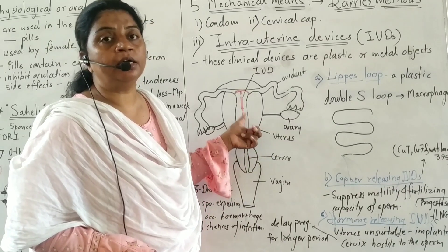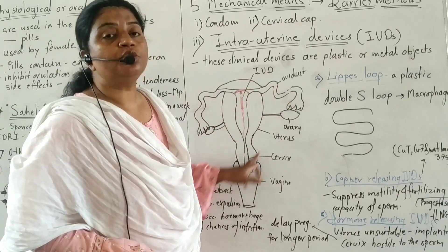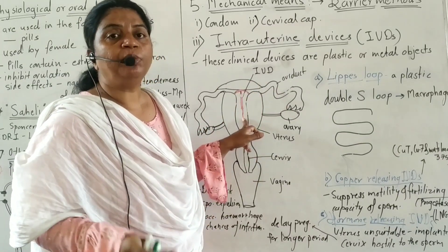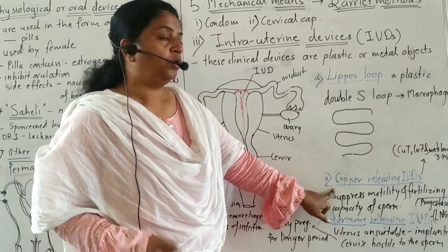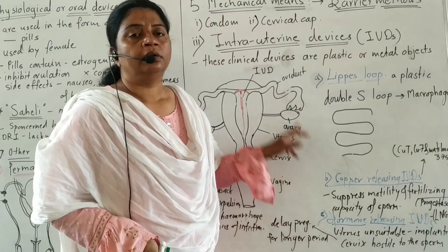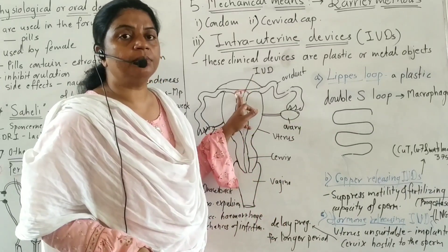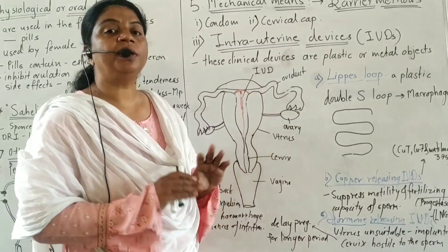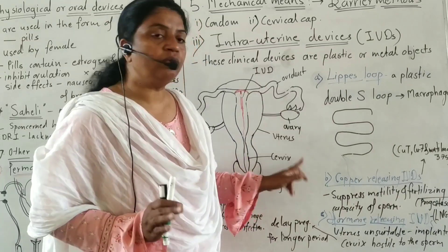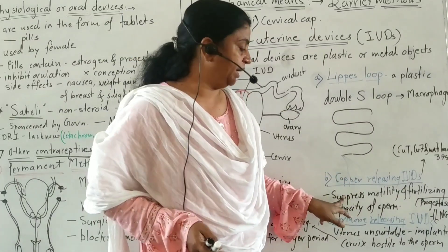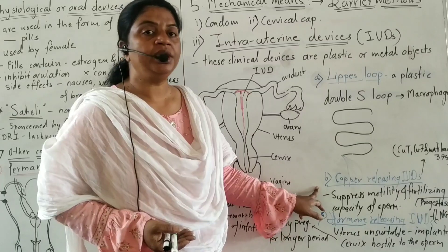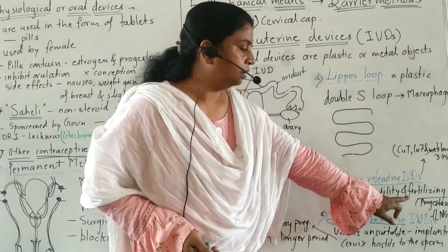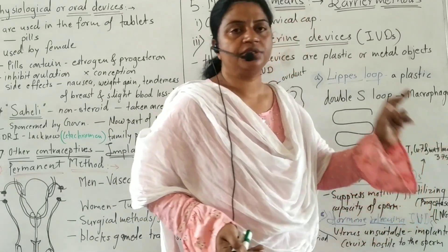There are a number of barriers — chemical barrier, physical barrier — and mechanisms such as macrophage action, copper-induced immobility, and reduced fertilizing capacity, all of which reduce the chances of fertilization, resulting in no pregnancy. The third type of IUD is hormone-releasing IUDs — examples include LNG-20 and Progestasert.